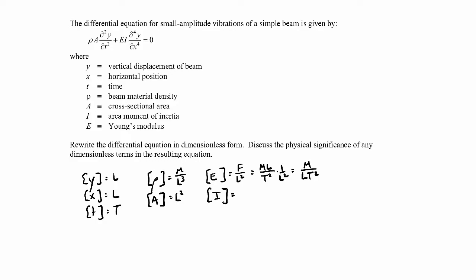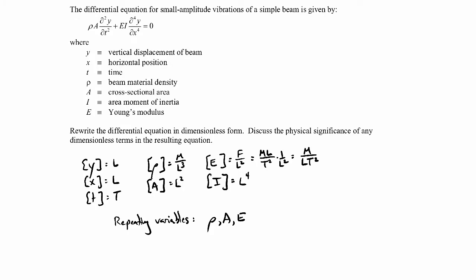So I should be length to the fourth. Let's go ahead and make this equation dimensionless. Let's choose repeating variables: we'll choose the density because it has a mass, the cross-sectional area because it has a length, and the elastic modulus because that has a time in there. So our repeating variables will be rho, A, and E.